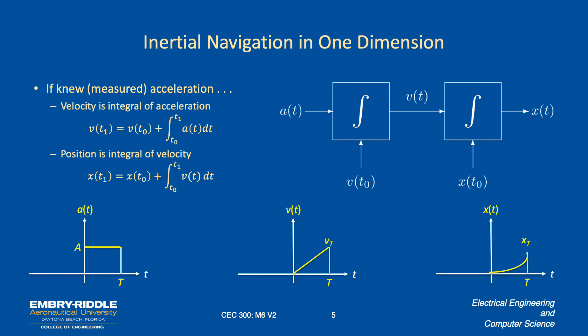So you have a double integration. And each of the integrators needs to know the starting position and the starting velocity. Hopefully the starting velocity will be zero. The starting position will be a known position on the surface of the Earth.